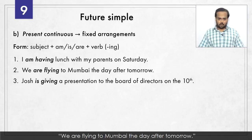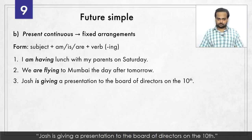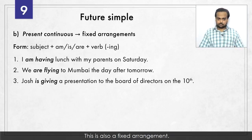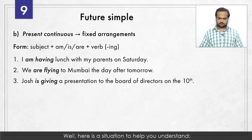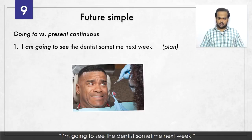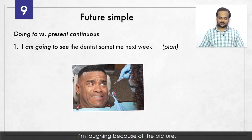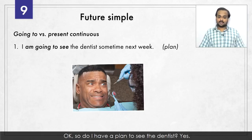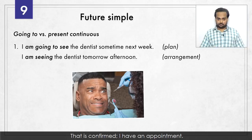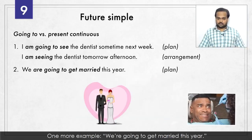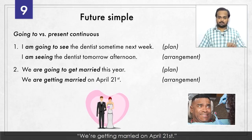If it's more than a plan – if we have made the arrangements – then we use the present continuous, which is stronger than 'going to.' For example: I am having lunch with my parents on Saturday – we have agreed on the time and place; it's fixed. We are flying to Mumbai the day after tomorrow – we've purchased the flight tickets. Josh is giving a presentation to the board of directors on the 10th – a fixed arrangement. The difference: 'I'm going to see the dentist sometime next week' is a plan – no appointment yet. 'I'm seeing the dentist tomorrow afternoon' is confirmed – I have an appointment. 'We're going to get married this year' is a plan; 'We're getting married on April 21st' is an arrangement.